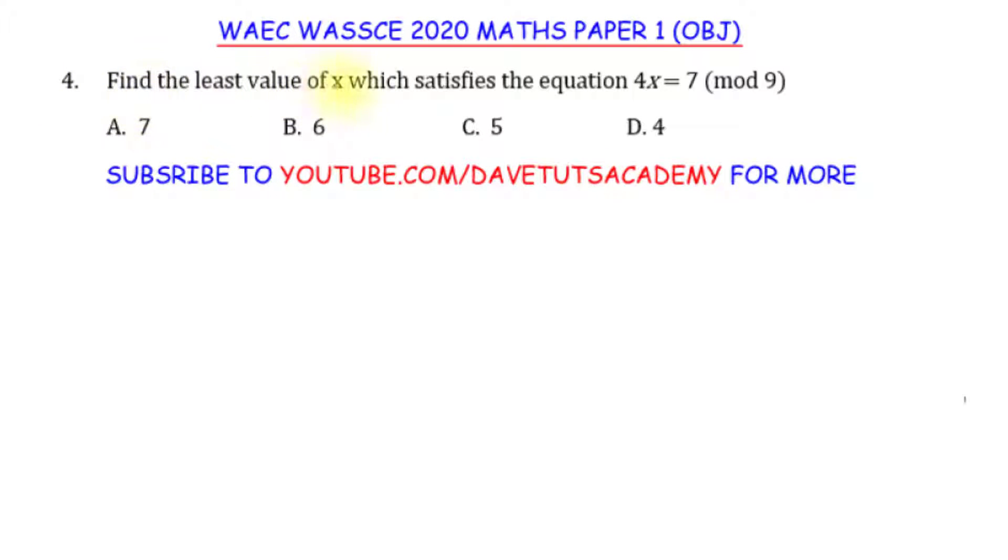In this question, we are asked to find the least value of x which satisfies the equation 4x is equal to 7 under modulo 9.